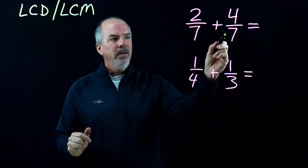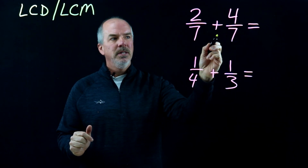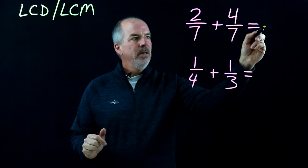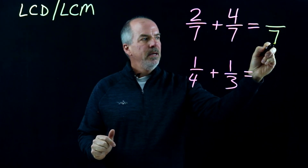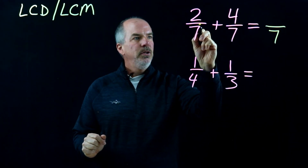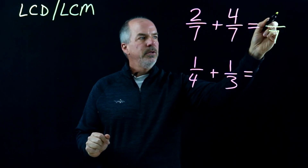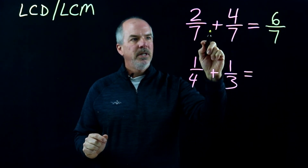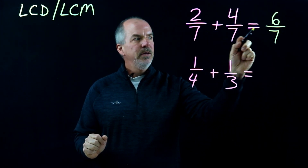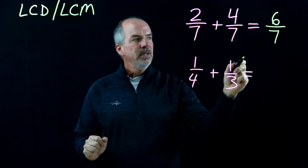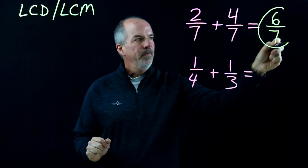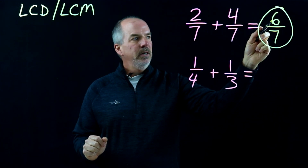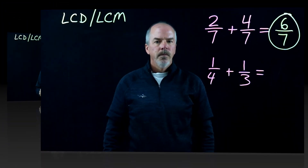In 2/7 plus 4/7, you can see that the denominator is the same — 7 is the same. So if I add this, I'll have 2 plus 4 equals 6, and when we add, our denominator stays the same. So 2/7 plus 4/7 equals 6/7, and that answer is in simplest form. There's no number other than 1 that is a factor of both 6 and 7.